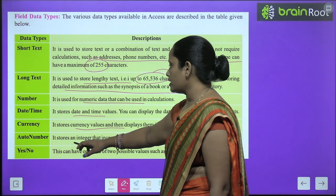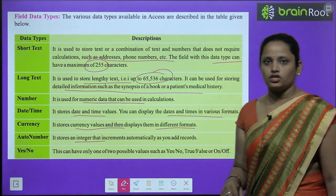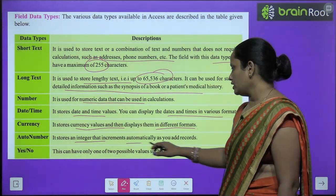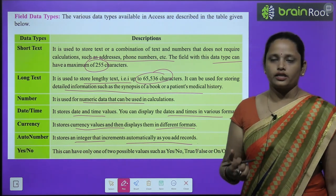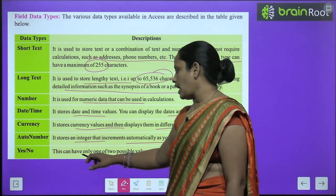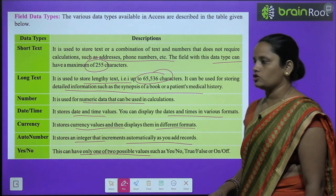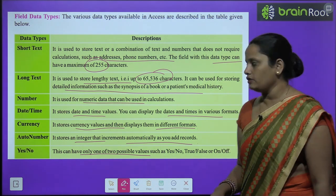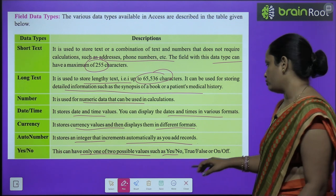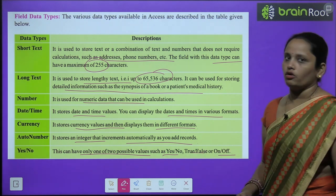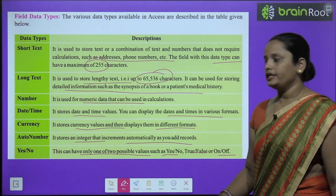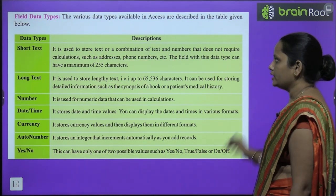Then comes AutoNumber, which stores integers that are automatically incremented and added to records on their own. Then comes Yes/No, which can have only one of two possible values — Yes or No, True or False, or On or Off. These are the different data types and their descriptions.